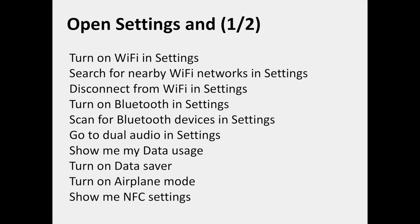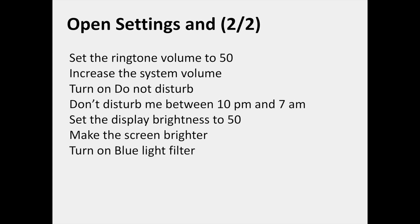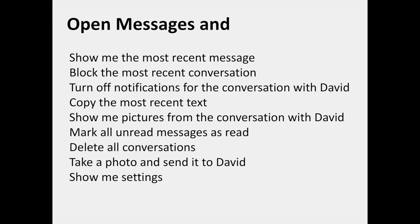In the Settings category, you can say: turn on Wi-Fi in settings, search for nearby Wi-Fi networks in settings, disconnect from Wi-Fi in settings, turn on Bluetooth in settings, scan for Bluetooth devices in settings, go to Dual Audio in settings, show me my data usage, turn on Data Saver, turn on Airplane Mode, show me NFC settings, set the ringtone volume to 50, increase the system volume, turn on Do Not Disturb, don't disturb me between 10pm and 7am, set the display brightness to 75, make the screen brighter, and turn on blue light filter.